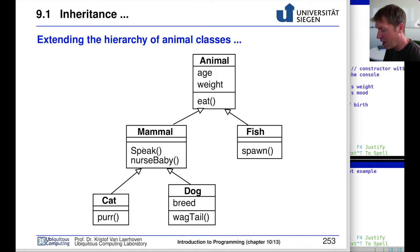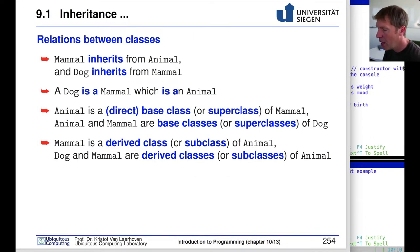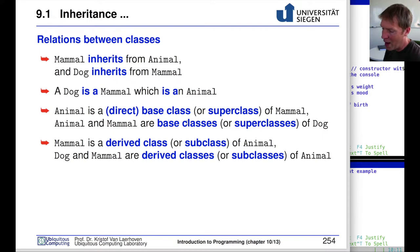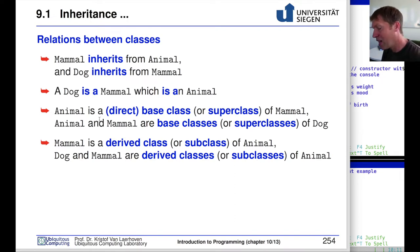A hierarchy means that a cat can inherit from a mammal, a mammal can inherit from an animal, and so on. This means there are different types of relations between classes — a class can be a parent or a child class. The terminology we use: a dog is a mammal, and a mammal is an animal. An animal is a direct base class or superclass of mammal. Mammal is a derived class or subclass of animal. Dog and mammal are both derived classes or subclasses of animal.